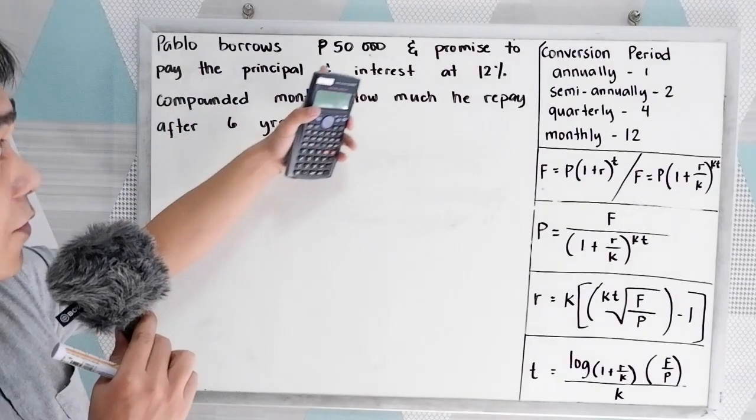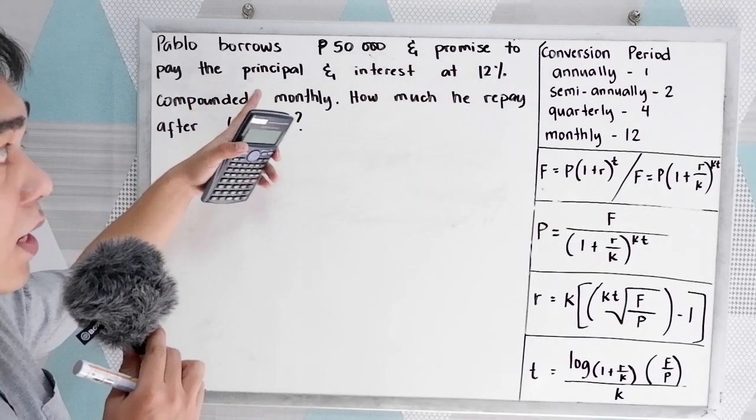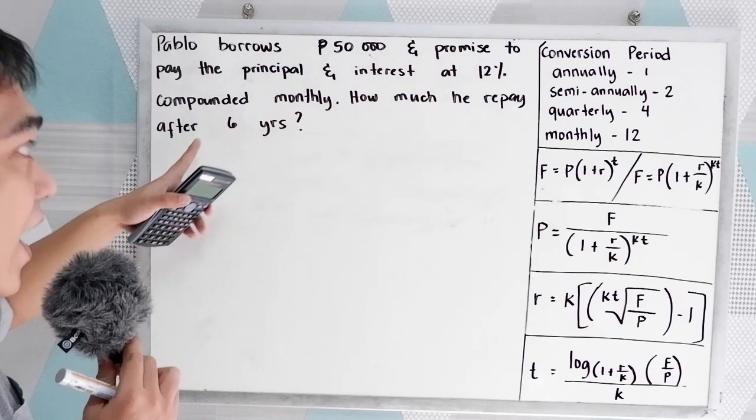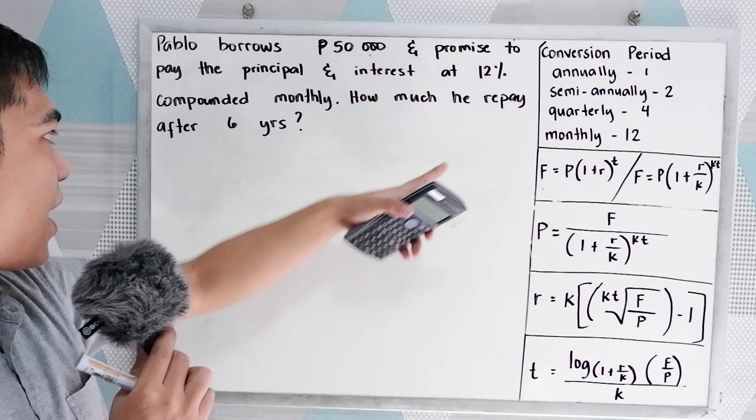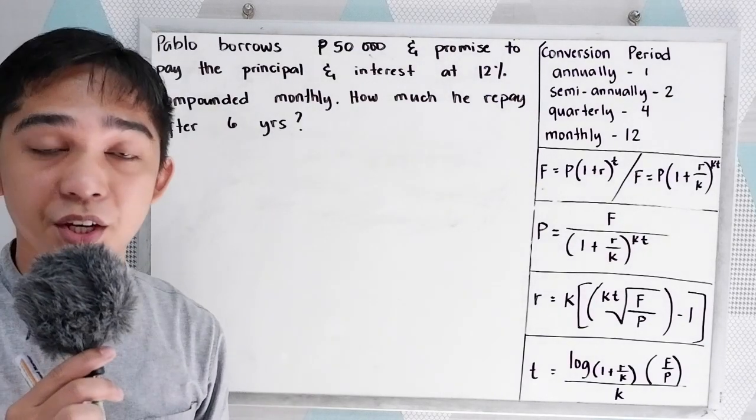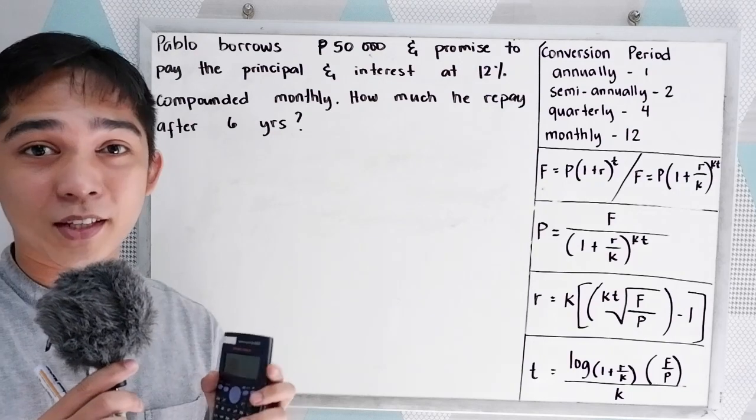Pablo borrows 50,000 pesos and promises to pay the principal and interest at 12% compounded monthly. How much will he repay after six years? So again, let us first find all the given.